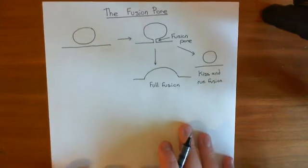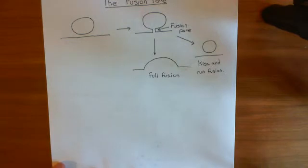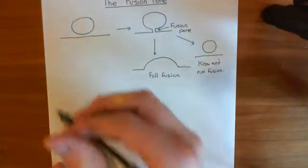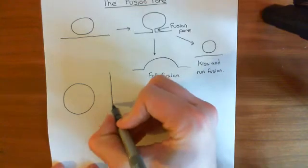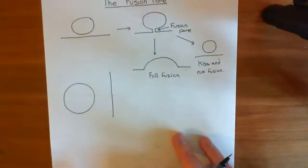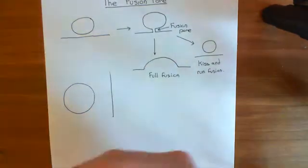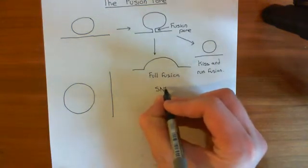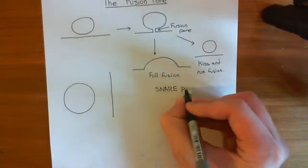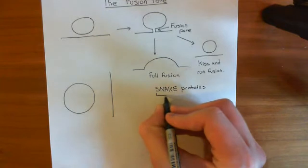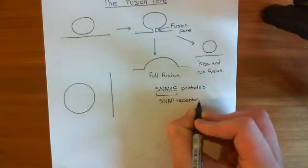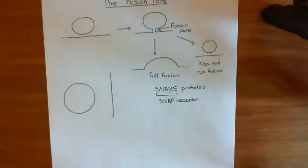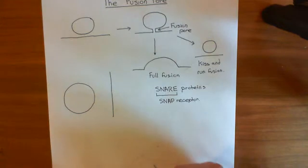Let me remind you of the core SNARE complex. We won't draw all of the proteins involved in the docking machinery — we won't refer to NSec1/Munc18 or complexin. We're just going to look at the core SNARE complex. SNARE proteins stands for SNAP receptor proteins. You can divide the SNARE proteins roughly into two groups: the V-SNAREs, which are those associated with the vesicle, and the T-SNAREs, which stands for target SNAREs. The V-SNAREs are those SNARE proteins within the membrane of the synaptic vesicle, and the T-SNAREs are those associated with the plasma membrane.